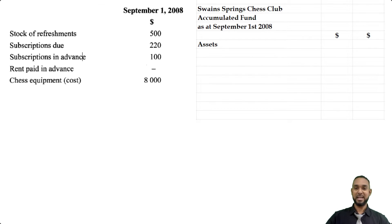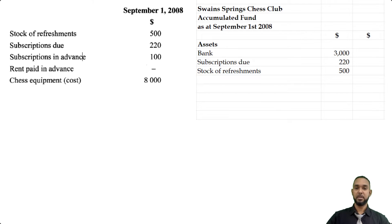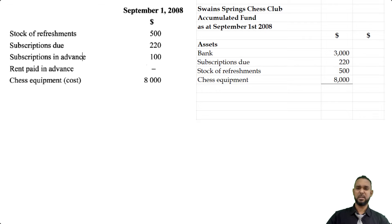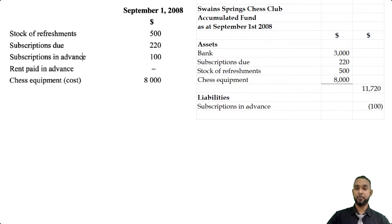So let's populate the assets: bank balance of $3,000, subscriptions due, stock of refreshments, and chess equipment. When we add everything up we get a total of $11,720. There was one liability — subs in advance of $100 — and we subtract that from total assets to give us an accumulated fund of $11,620.